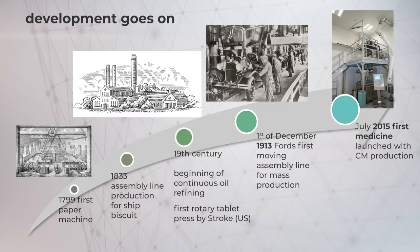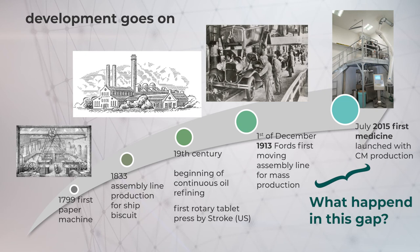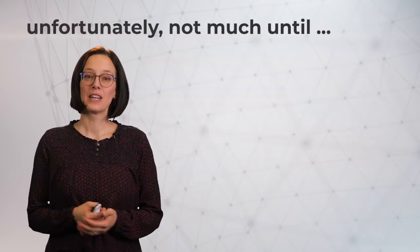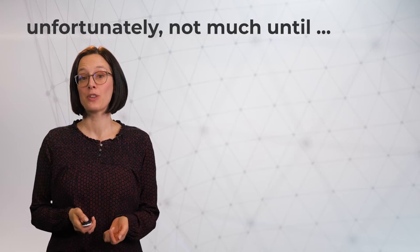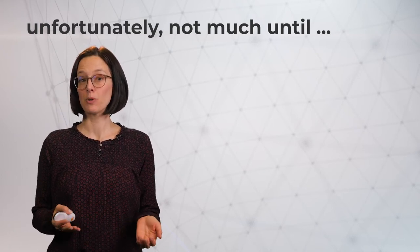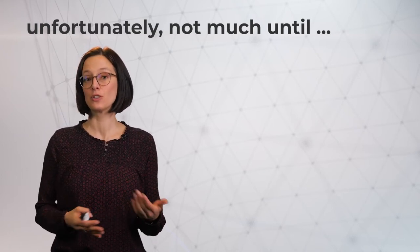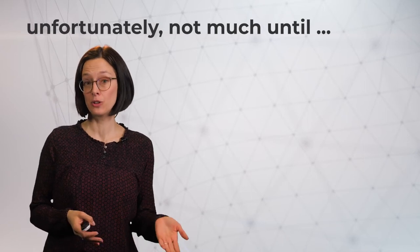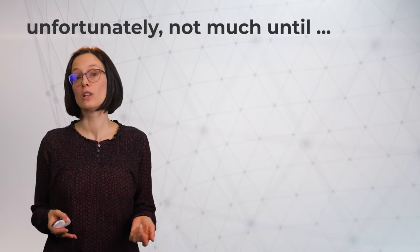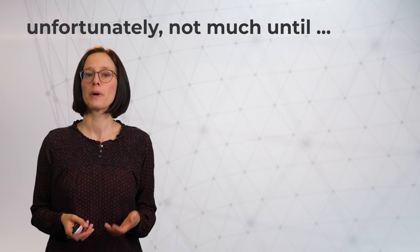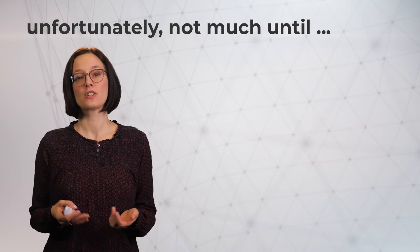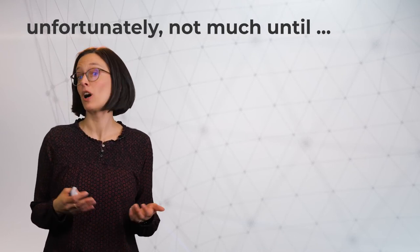There was a huge gap, and you might ask yourself what happened during that time. Unfortunately, the reality is not very much. It was only around the year 2000 that first academic programs started to investigate continuous manufacturing, at Rutgers University by Muzzio and colleagues in the USA, followed by several universities such as Ghent, MIT, among others.